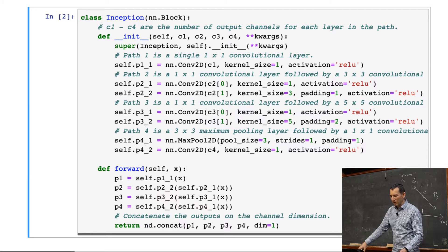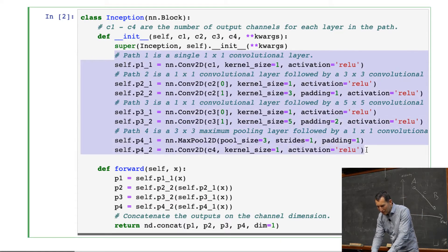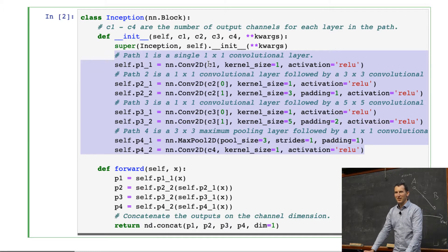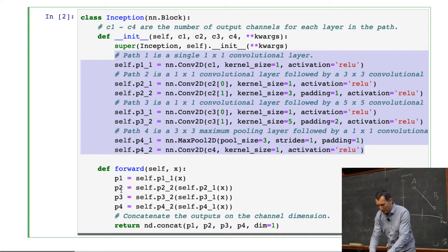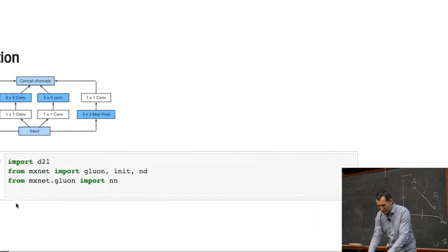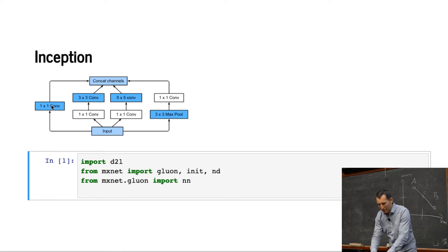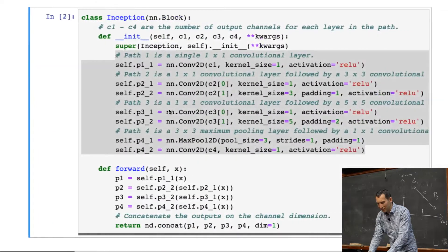So, the first thing I need to do is I need to initialize the components. I need for path 1 a 2D convolution of size 1 by 1. For path 2 I need a 1 by 1 and a 3 by 3 convolution. For path 3 I need a 1 by 1 and a 5 by 5 with appropriate padding. For path 4 I need a max pooling and a 1 by 1. These are all the parts up here that I first need to define.